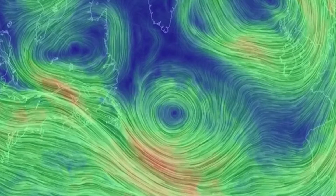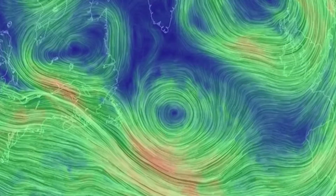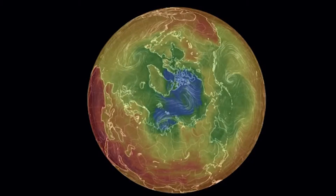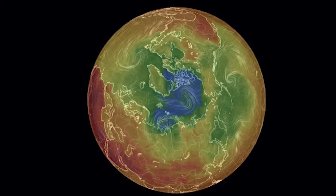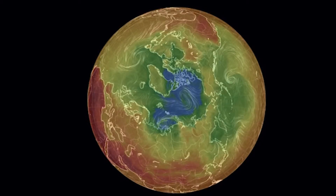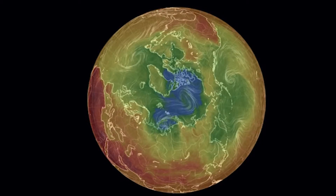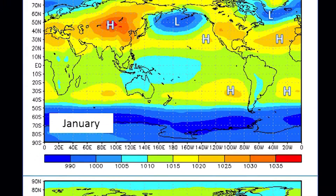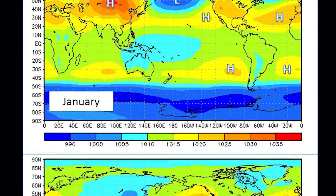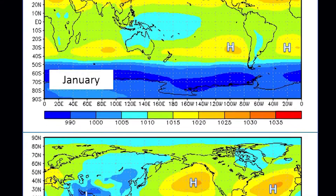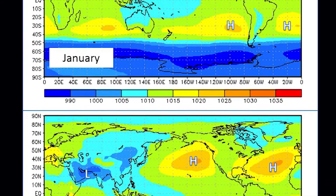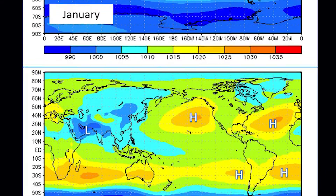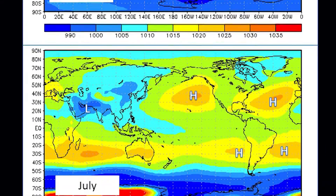Over cold surfaces, air cools, contracts, and draws overlying air downward to form a high pressure ridge. Over land areas, this relationship is especially obvious. Mid-latitude continental areas, such as Central Asia and North America, become very cold in the winter. This can raise air pressure to 1050 millibars or more — a very strong high — which dominates the wind and weather of these areas.